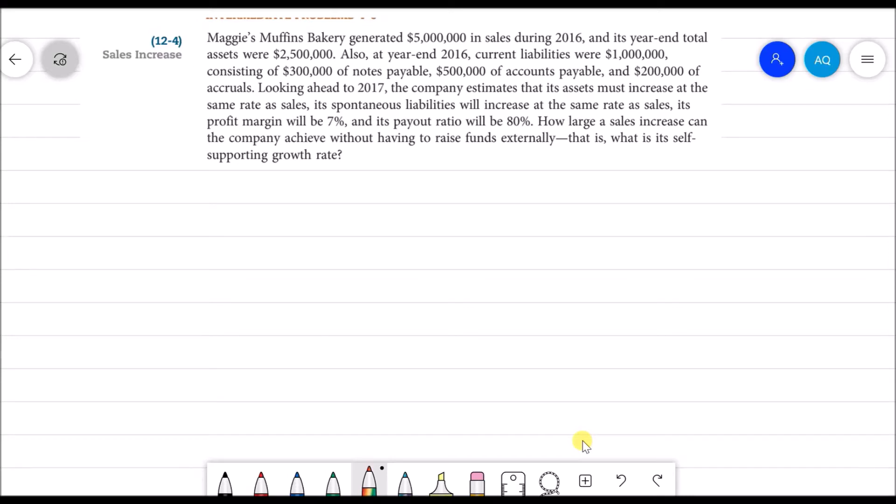This is question 12.4 from the exercise. Let's read it first. Maggie's Muffin Bakery generated $5,000,000 in sales during 2016, and its year-end total assets were $2,500,000. Also at year-end 2016, current liabilities were $1,000,000.